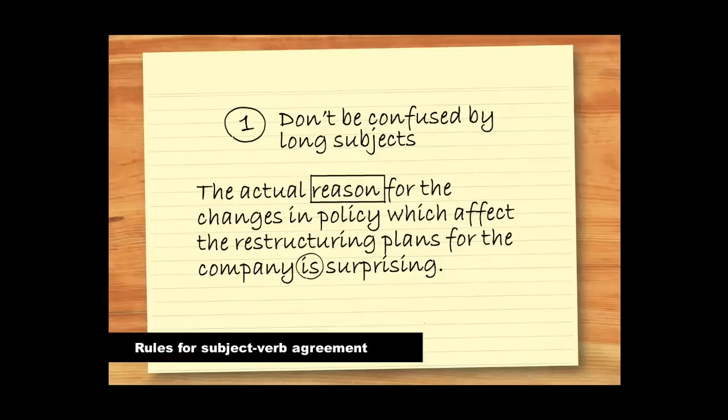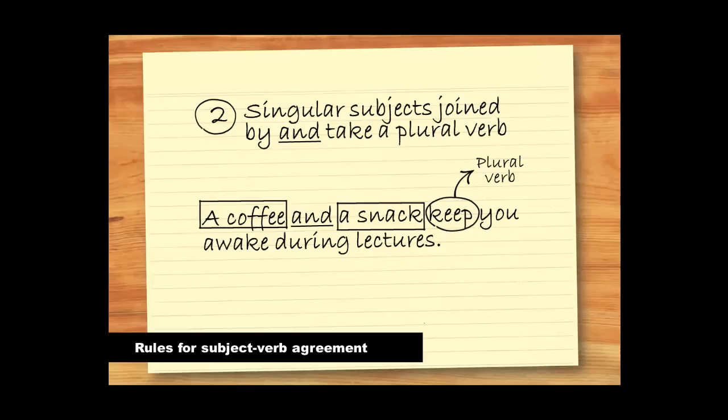There are some important things to remember for subject-verb agreement. As we've seen, it's important not to be confused by long subjects. Just find the central word and make your verb agree with this. Second, when we have more than one singular subject joined by AND, we use the plural verb.